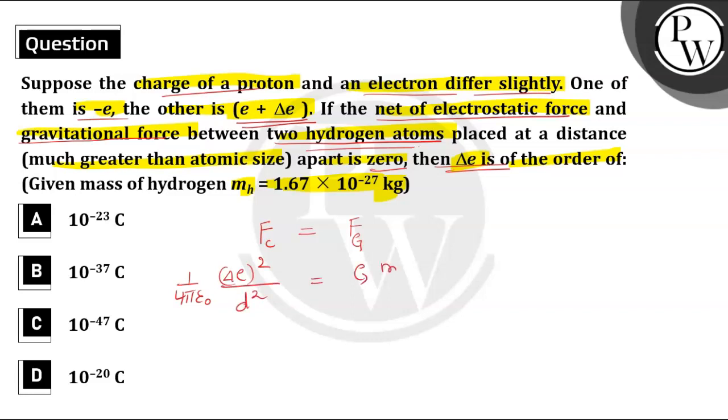Should be equal to G into mass of hydrogen into mass of hydrogen. So we get mass of hydrogen square divided by the distance square. So this d square and this d square will cancel out.